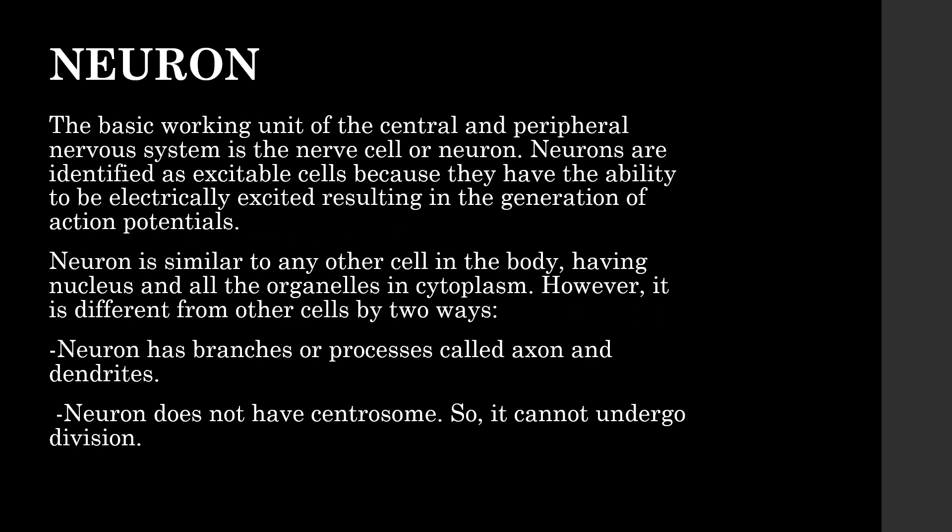Neurons. The basic working unit of the central and peripheral nervous system is the nerve cells, or neurons. Neurons are identified as excitable cells because they have the ability to be electrically excited, resulting in the generation of action potentials. Neurons are similar to any other cell in the body, having a nucleus and all other organelles in the cytoplasm. However, neurons differ from other cells in two ways.